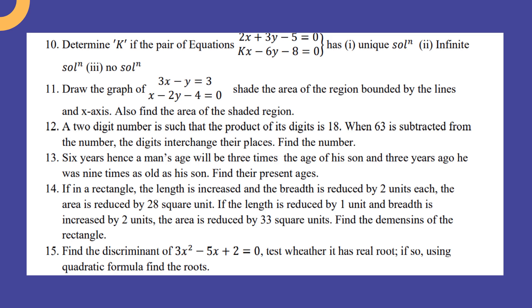If in a rectangle the length is increased and the breadth is reduced by two units, the area is reduced by 28 square units. If the length is reduced by one unit and breadth is increased by two units, the area is reduced by 33 square units.